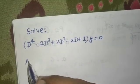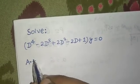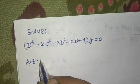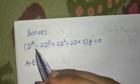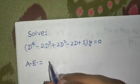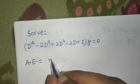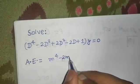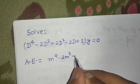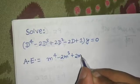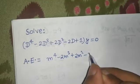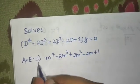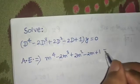The first step in this type of question is to find the auxiliary equation. To get the auxiliary equation, just replace D by m — so it becomes m to the power four minus two m cubed plus two m squared minus two m plus one, and then equate it to zero.